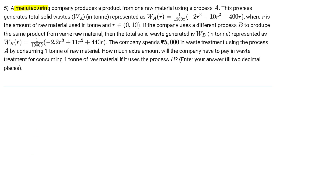Question number five says: a manufacturing company produces a product from one raw material using process A. This process generates solid waste, denoted by W_A in tons, represented by a given equation, where r is the amount of raw material used in tons and it can range from 0 to 10. If the company uses a different process, that is process B, to produce the same product from the same raw material, then the total solid waste generated is W_B, and the equation is also given.